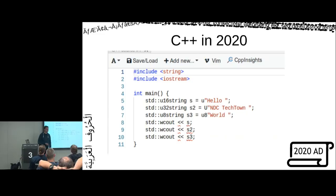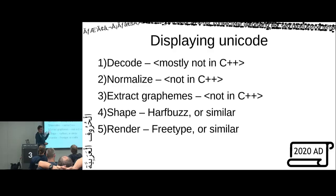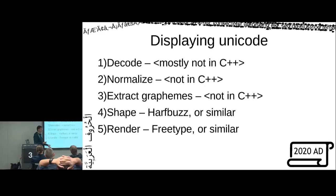So where are we with displaying Unicode in C++? Decoding: mostly not in C++ but sort of possible. Normalization: not in C++. Grapheme extraction: not in C++. Shaping: external libraries like HarfBuzz. Rendering: external libraries like FreeType. To edit text you need everything up through shaping — and we're kind of stuck.